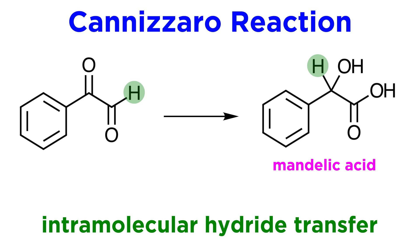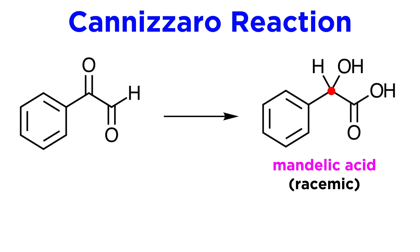Indeed, this can be done very cleanly, and the hydrogen on the aldehyde group can be transferred onto the ketone carbonyl. We must also notice that the product is racemic, also called paramandelic acid, unlike naturally occurring mandelic acid, which is optically pure.